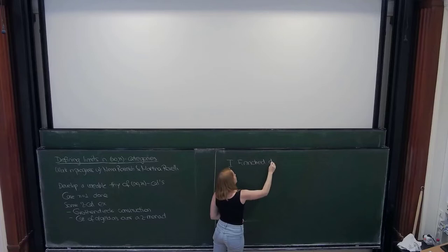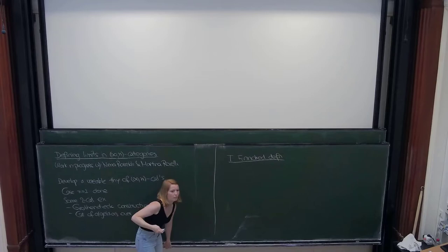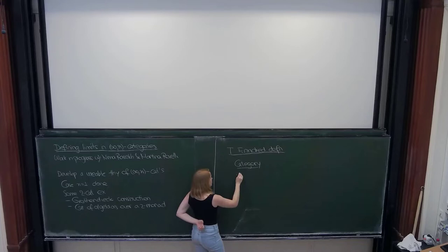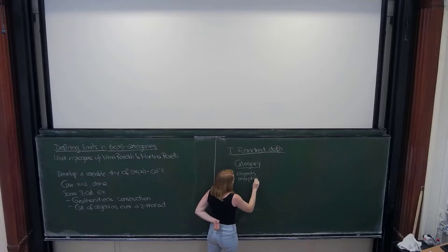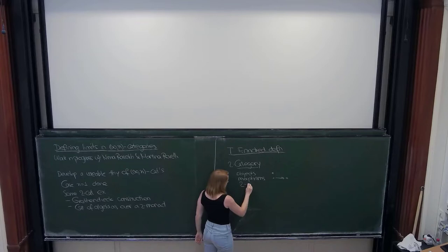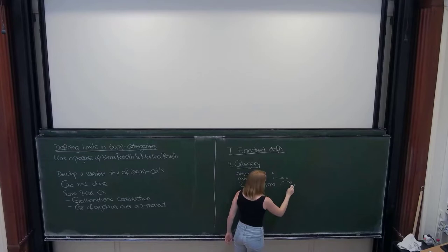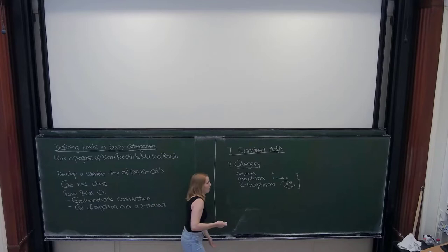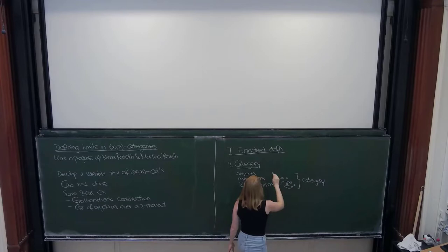I want to give a first definition of limits, which I call the enriched definition. To recall: a category consists of objects and morphisms between them. A 2-category adds higher structure—morphisms between morphisms, called 2-morphisms. Now the morphisms no longer just form a set but form a category together with the 2-morphisms. So a 2-category is a category enriched in categories.